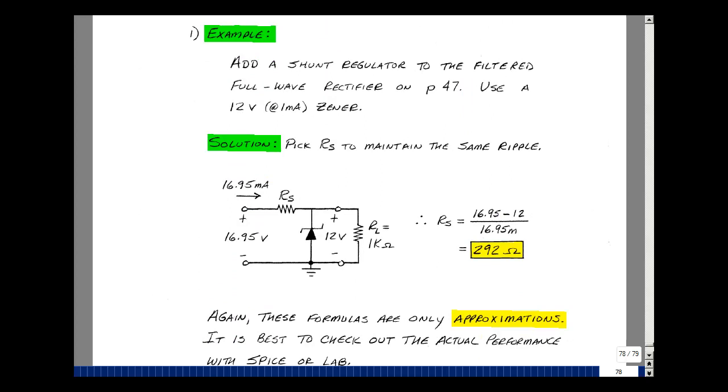Let's add a regulator to our design on page 47. Let's use a low-power Zener that's 12 volts and maybe has a minimum current of 1 milliamp. My average voltage was 16.95, and the average current was 16.95 milliamps. In other words, we had a 1K load. This resistor now is going to be the difference of these two node voltages, 16.95 minus 12, divided by the current of 16.95. You get 292 ohms. A standard resistor will be 300.